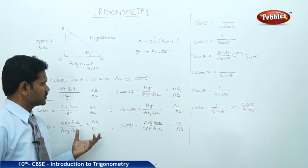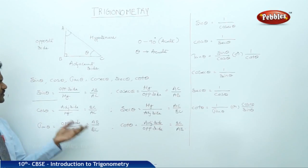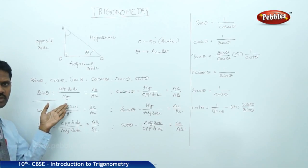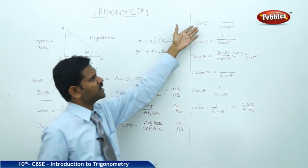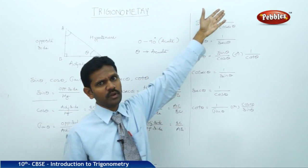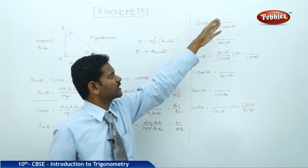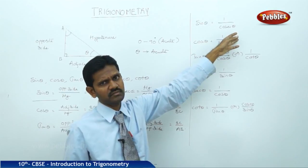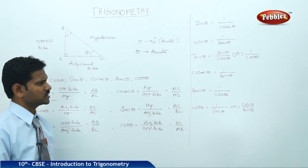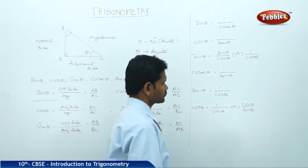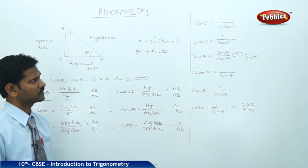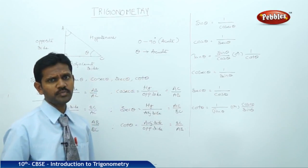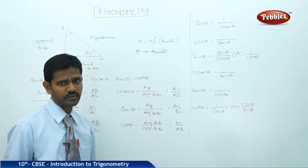To summarize: sin theta in terms of words is defined as opposite side by hypotenuse, and at the same time sin theta equals 1 by cosec theta — which expresses it as a trigonometric ratio in terms of another trigonometric ratio. After this, let us discuss some more important formulas of trigonometry.